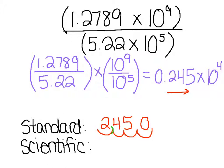Then I'm going to write this number in scientific notation. I want a number between 1 and 10, not including 10. So 2.45 times 10 to the power of — counting: 1, 2, 3 — so 2.45 times 10 to the 3rd. And that is in proper scientific notation.